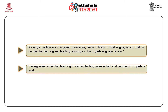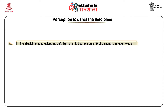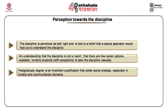Kumar draws on Bourdieu here and states that by and large sociological practitioners remain submerged in the common sense of their own environment. Such a divide is further strengthened by the perception of students, teachers and community towards sociology — the discipline is perceived as soft and light, tied to a belief that a casual approach would help one understand it. Understanding that the discipline is not a catch and that there are few career options available renders students inclined to take the discipline casually. Even when there are teaching jobs, it is difficult for qualified candidates to get selected because of rampant corrupt practices.